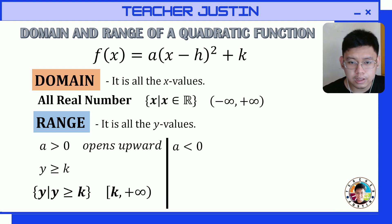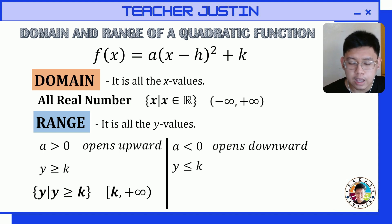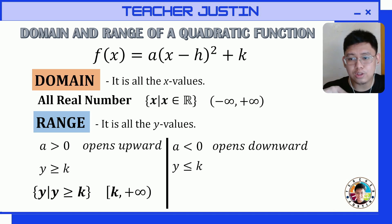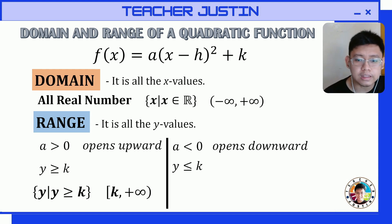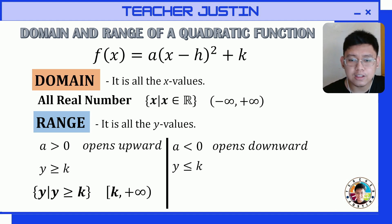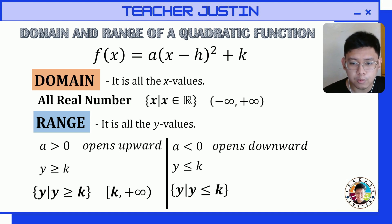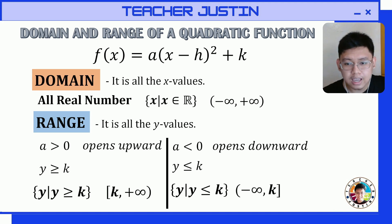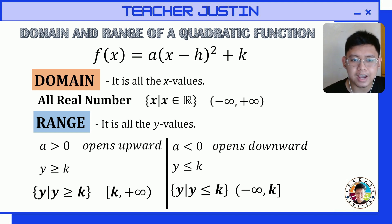The other condition is if our a is less than zero, so the parabola opens downward. Therefore the value of y will be less than or equal to k. The vertex is at the highest point, so k here is the maximum value of our parabola. We can write it as: y such that y is less than or equal to k, or in interval form from k to negative infinity.